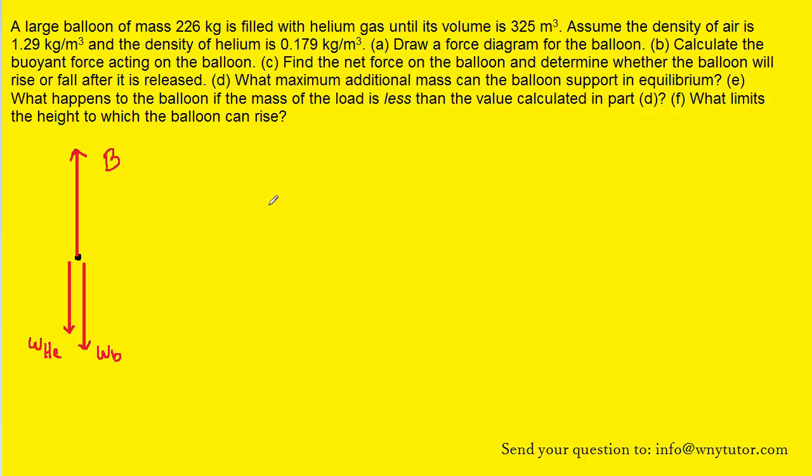For part B of the question, we can write down the equation for the buoyant force. The buoyant force is equal to the density of the surrounding fluid times g times the volume of the submerged portion of the object. In some cases, the object is only partially submerged in a fluid. For example, if you had a ball floating at the surface of a body of water. In this case, however, the volume submerged will be the entire volume of the balloon because the balloon is completely submerged in air.